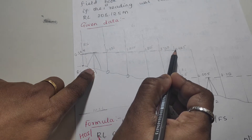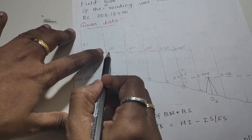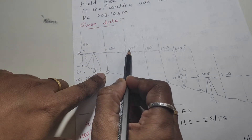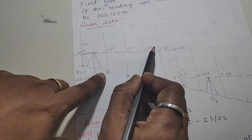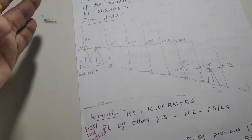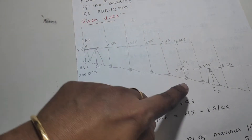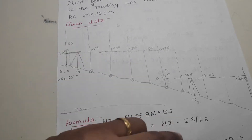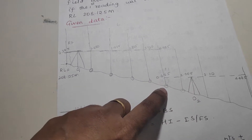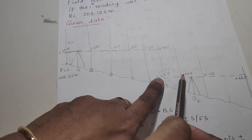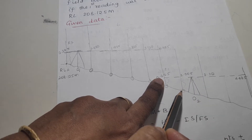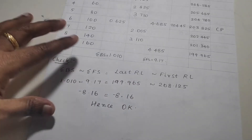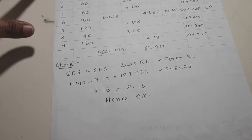We take the height of instrument using the reading 4.685, and then with reading 1.030 and 0.625, we add the RL to get the height of instrument. So this is how to carry out the height of instrument method calculations.